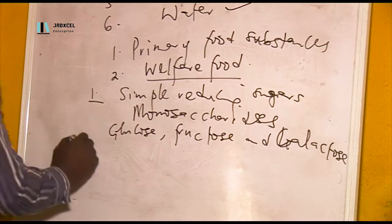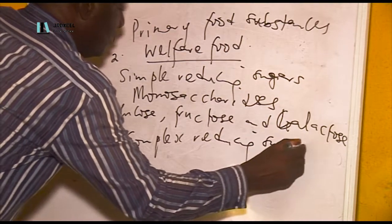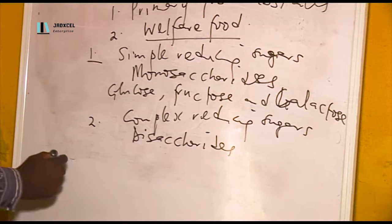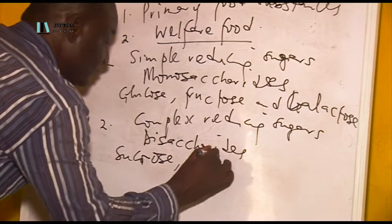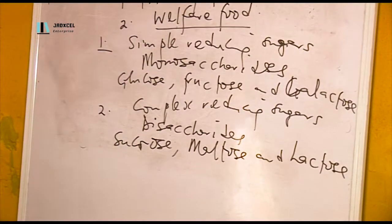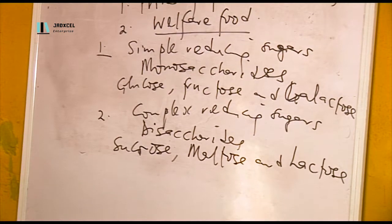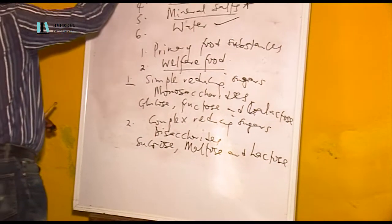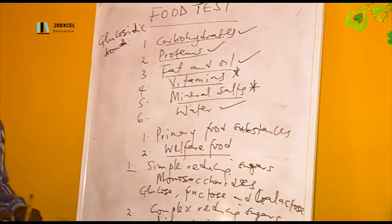Two: complex reducing sugars, known as disaccharides. These are sucrose, maltose, and lactose. The reason why they are called complex reducing sugars is because they have two monosaccharides combined together by a glucosidic bond. The name of the bond that combines the two monosaccharides in disaccharides is the glucosidic bond.